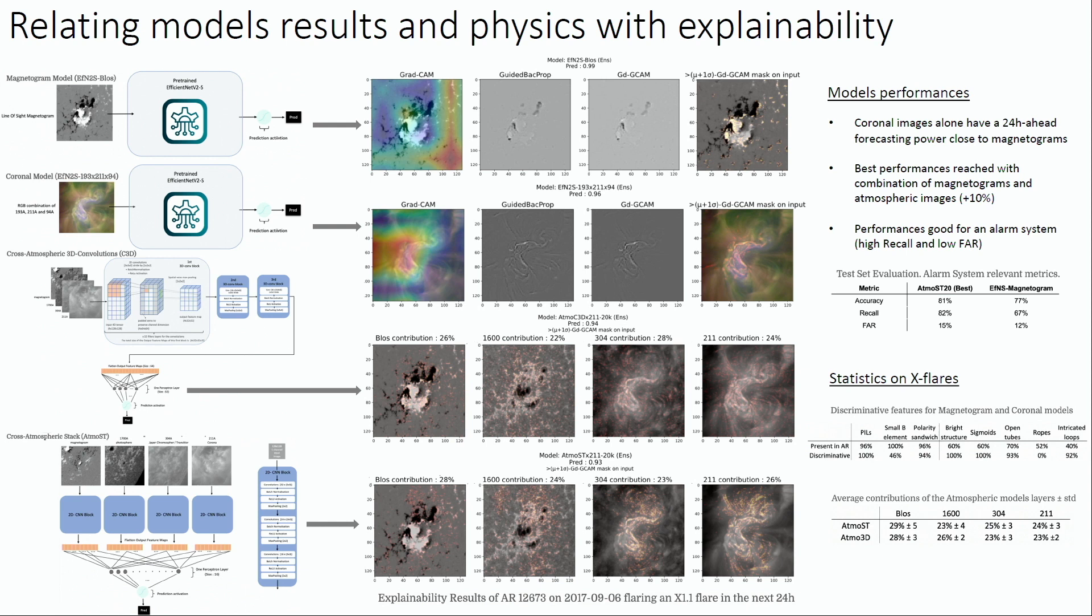I use combination of magnetogram, 1600, 304, to 211 angstrom images with the idea to have images representing the different layers of the solar atmosphere in combination to the magnetogram to see if it improves the performances.